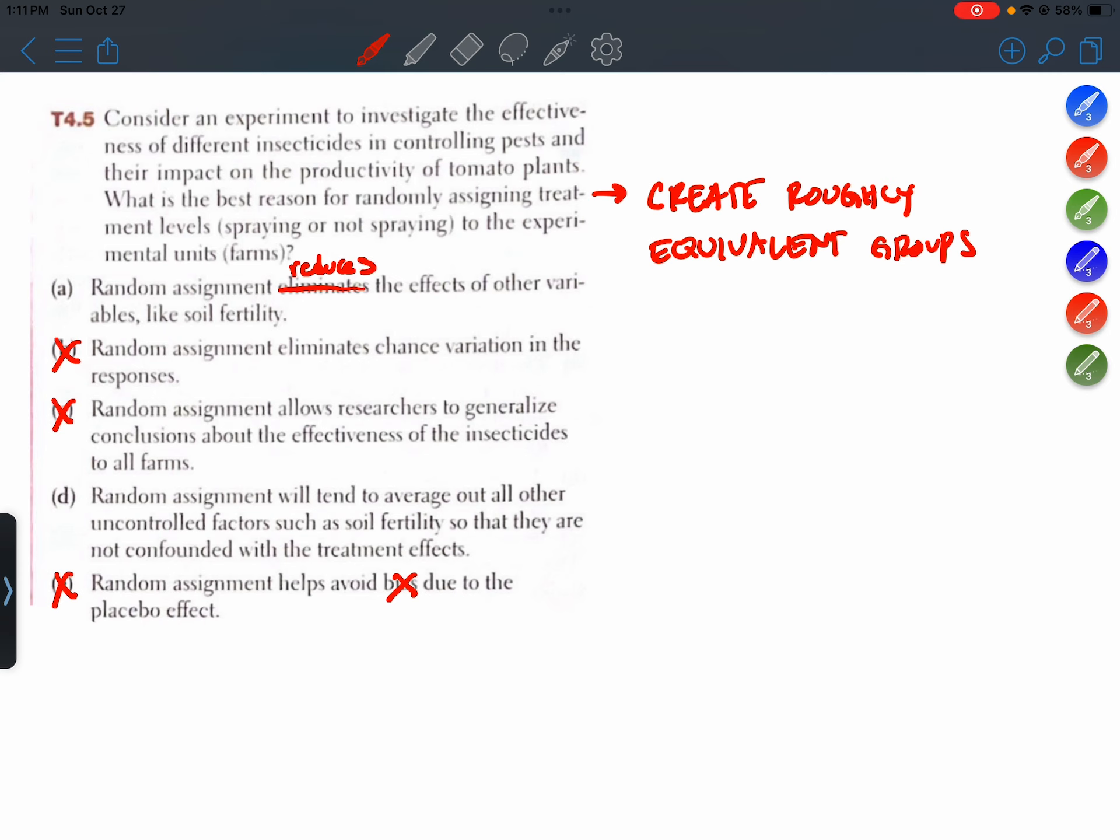And statement D also mentioned that. It talked about averaging out or balancing out these uncontrolled factors so that they're not confounded. When things are balanced out or averaged out, to me, it sounds like we've got roughly equivalent groups if everything else is being balanced out. So I think D is the best choice in terms of this idea of creating roughly equivalent groups.